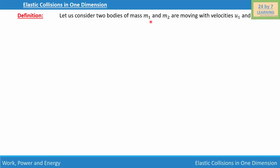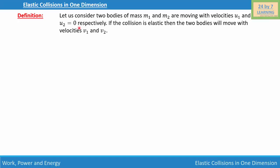Let us consider two bodies of mass m1 and m2 moving with velocities u1 and u2 equals to 0 respectively, which simply means that the first body of mass m1 is moving with velocity u1 and the second body of mass m2 is at rest. If the collision is elastic then the two bodies will move with velocities v1 and v2 respectively. In order to explain this, I'm going to draw a picture based on the given information.